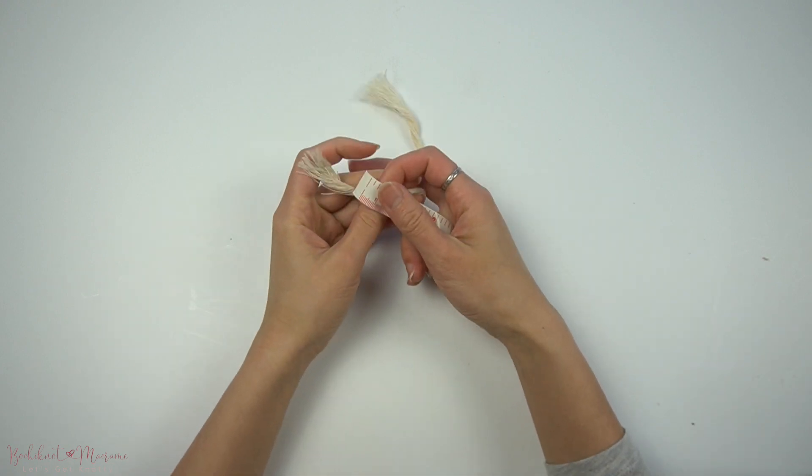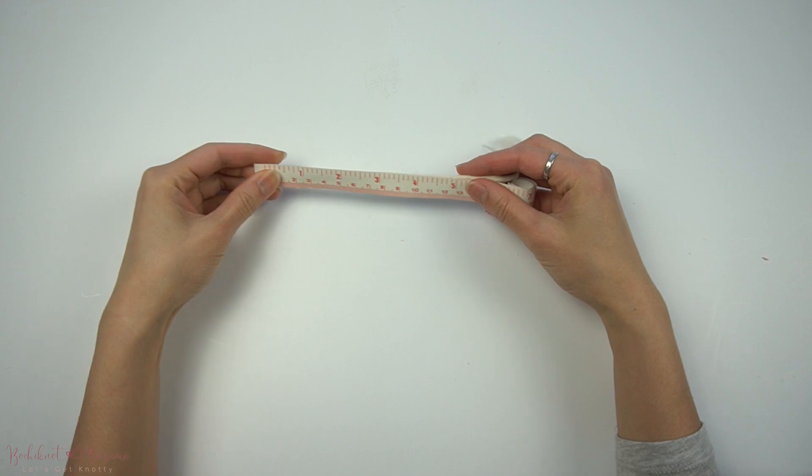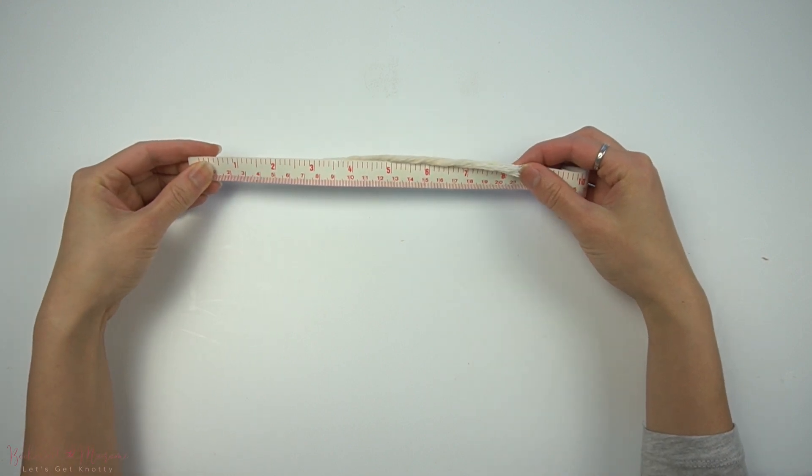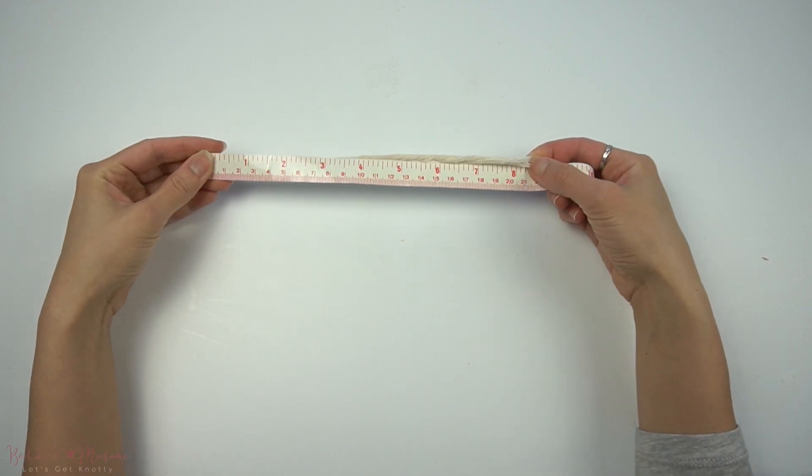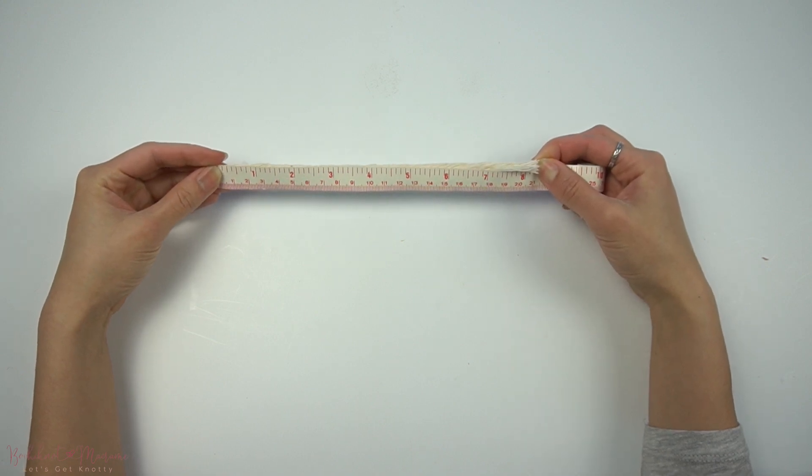So having measuring tape is super important. I use it on every single project, whether I'm following a tutorial or following a pattern that I have created, or I'm recreating a new pattern. I always need to measure out cord for my projects.